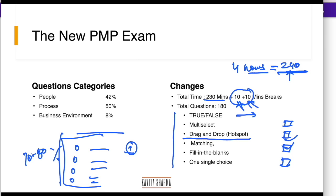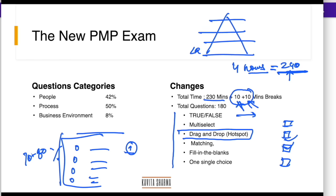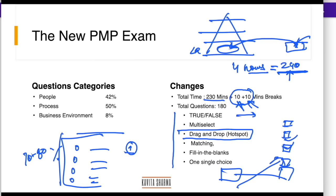You would also have drag and drop questions — for example, Maslow's hierarchy where you need to place levels. These are called hot zones or drag and drop questions. You might also have matching questions, and fill-in-the-blank questions where you need to type. One single-choice is still there. So there are different types of questions, and when preparing for the exam, please ensure you practice all of these types.